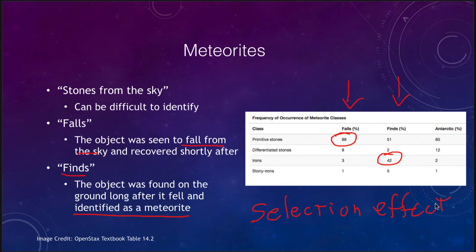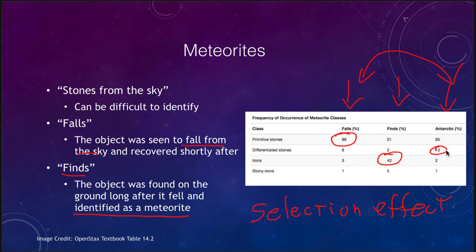Falls represent a completely random sample of meteorite types, making them the better reference. In Antarctica, results look much more similar to falls — with lots of stony meteorites and very few iron meteorites, quite different from typical finds. Antarctic meteorites are technically finds, but they stand out against the icy surface, and researchers actively search for them, reducing the selection bias seen in ordinary finds.